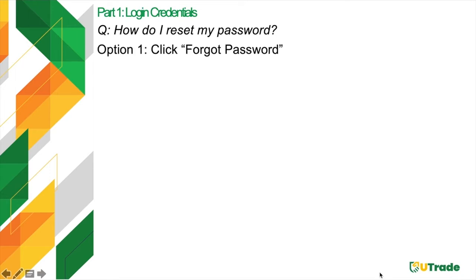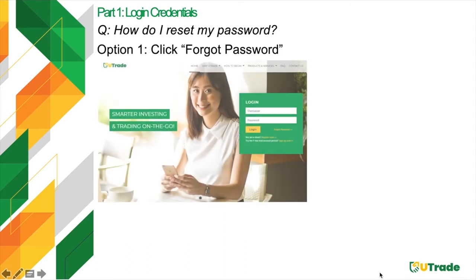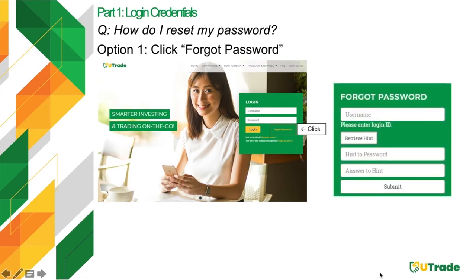To reset your password, you have two options. The first option is by clicking the Forgot Password button, which is located below the field where you type in your password. Upon clicking, a small green box will pop up. You will then need to provide your username as well as your answer to the hint question, then click Submit. For successful attempts, you will receive an automated email containing further instructions on how to access your account.